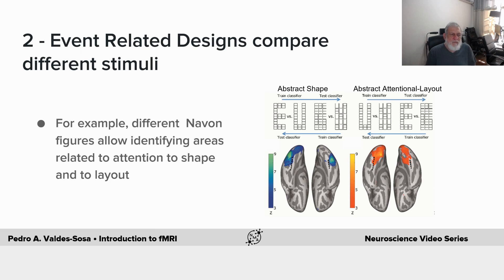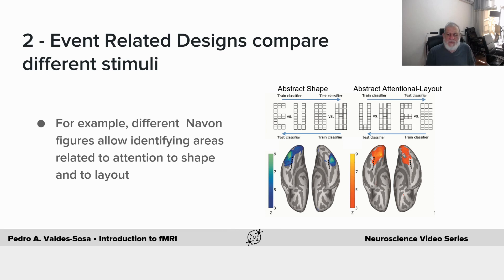On the other hand, we have what are known as event-related designs. Here you compare different stimuli. This is a complex experiment provided by Mitchell de Sosa, the director of the Cuban Neuroscience Center. Essentially, he changes what are known as Navon figures — figures that are bigger shapes composed of smaller shapes, which can be letters or just blocks.